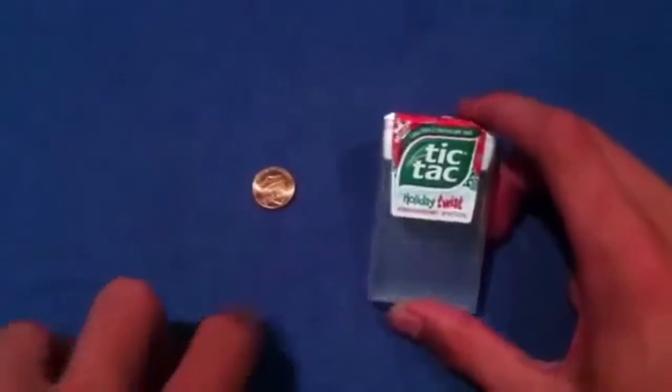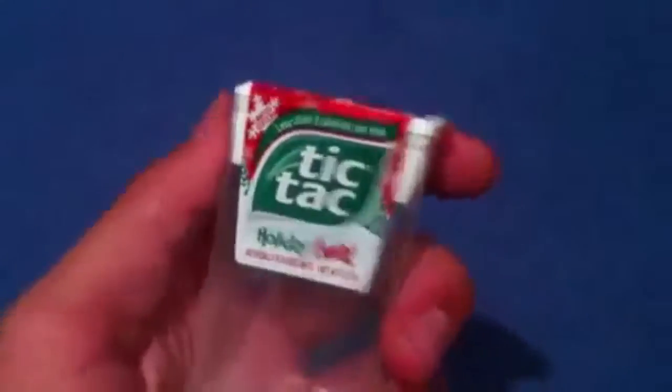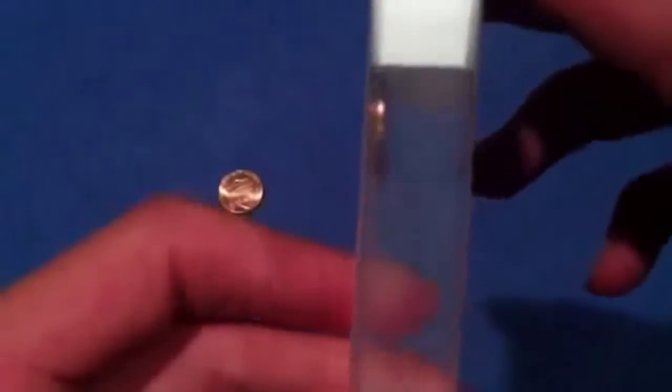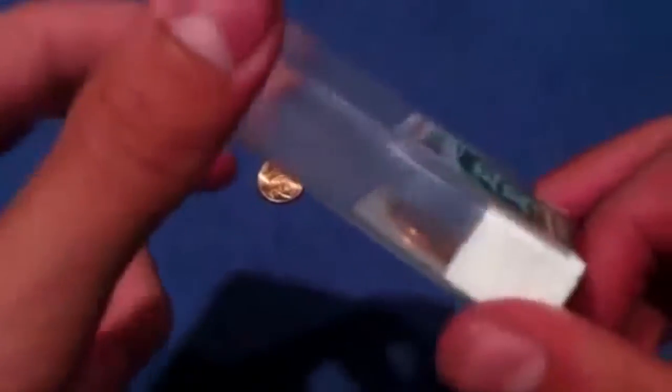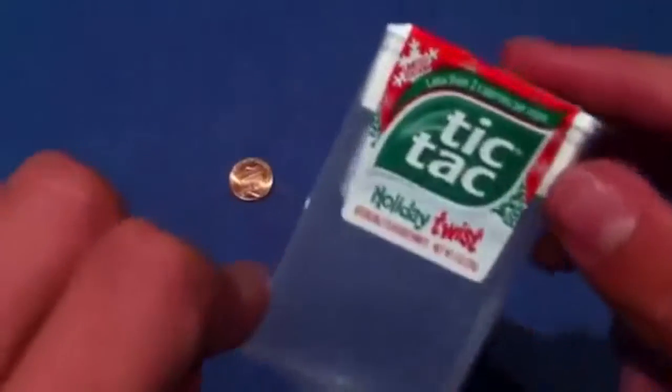There's the first penny. Where's the second? If you were to look at this box right now, you'd tell me it's empty, right? Front, back, top, it's empty. But it's not. Look at this, guys. The penny is lodged into the cap of this Tic Tac box and it's hidden by the sticker. It's that cool.